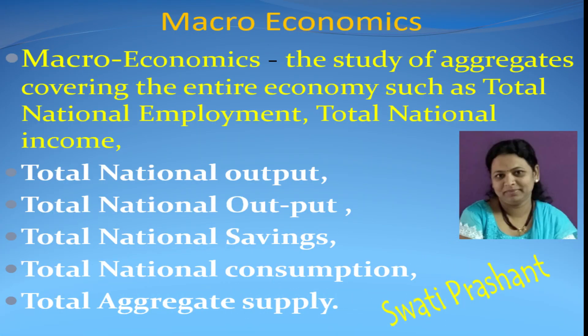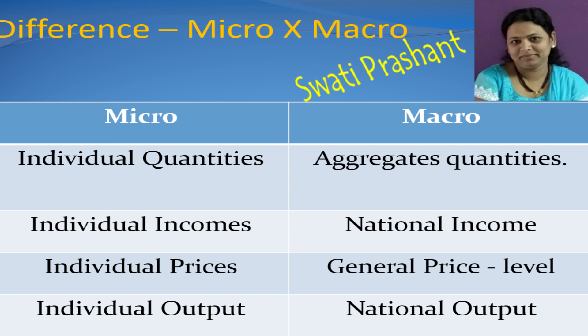If you observe the definition, you will find the exact difference between microeconomics and macroeconomics. Microeconomics studies individual quantities and macroeconomics studies aggregates of these quantities. Microeconomics studies individual income and macroeconomics studies national income. Microeconomics studies individual price and macroeconomics studies the general price level. Microeconomics studies individual output and macroeconomics studies national output or national production.